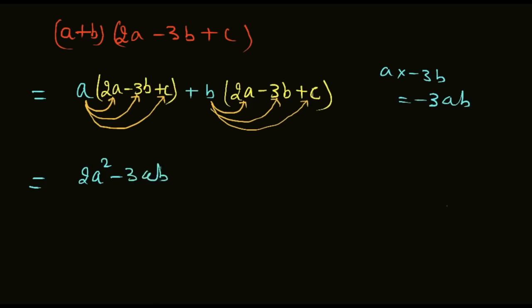a into c plus ac. Next, multiply with b: 2a into b equals 2ab, and minus 3b into b is minus 3b squared. And b into c is bc.